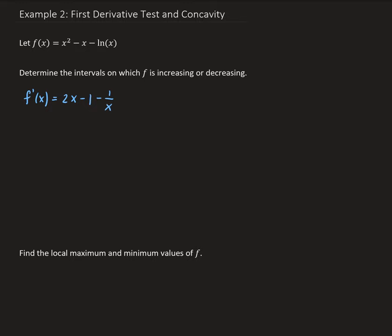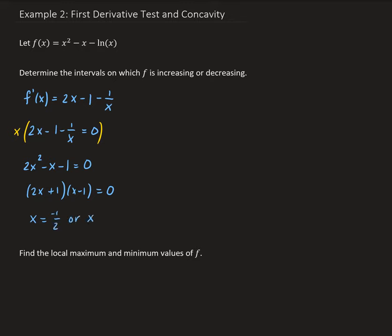So we're going to set this equal to zero. What we can do here is go ahead and multiply both sides by x. This will give us 2x squared minus x minus 1 equals zero. And this is going to factor as 2x plus 1 times x minus 1, giving us solutions of x equals negative one-half or x equals 1.